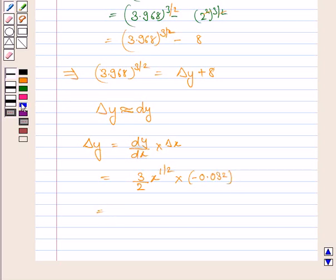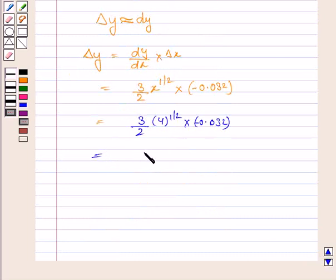Let's now substitute the value of x. So we have 3 by 2 into 4 to the power 1 by 2 into minus 0.032. Now square root of 4 is 2. So this is 3 by 2 into 2 into minus 0.032. Now minus 0.03 into 3 is equal to minus 0.096.